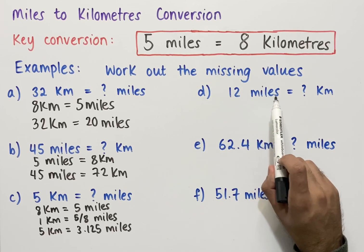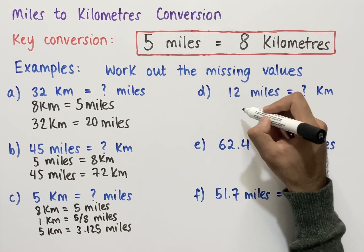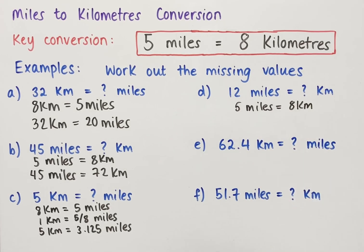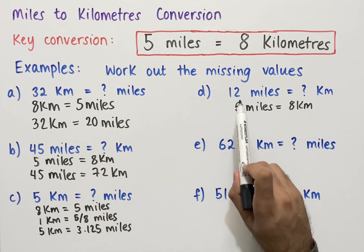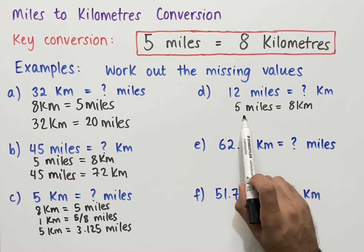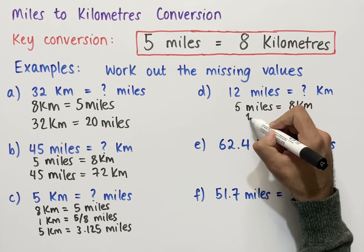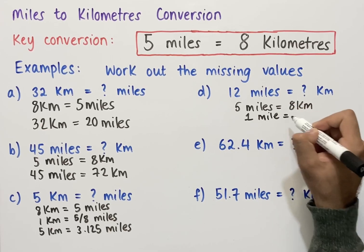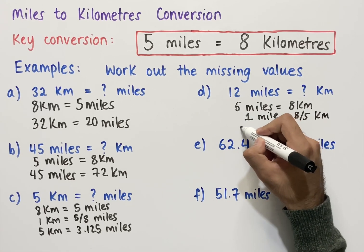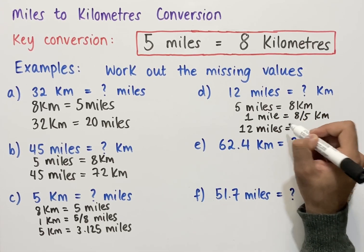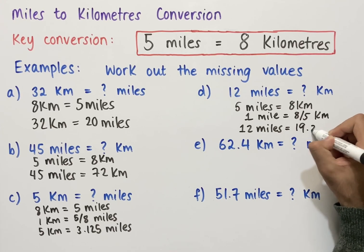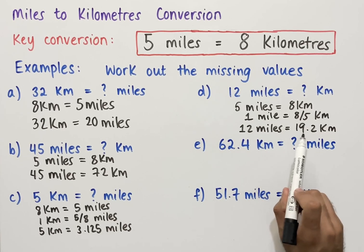Example D asks us to work out what 12 miles equals in kilometers. Using our conversion — 5 miles equals 8 kilometers — we check whether 12 is a multiple of 5. Since it isn't, we use the unitary method. Dividing both sides by 5 gives us 1 mile equals 8/5 kilometers. Multiplying both sides by 12, we get 12 miles equals 8/5 times 12, which on a calculator gives us 19.2 kilometers.